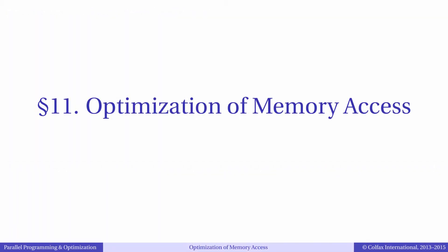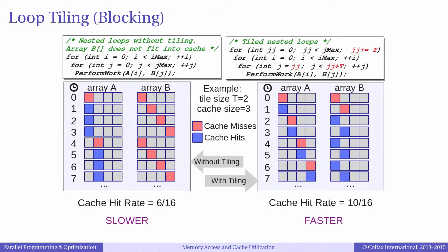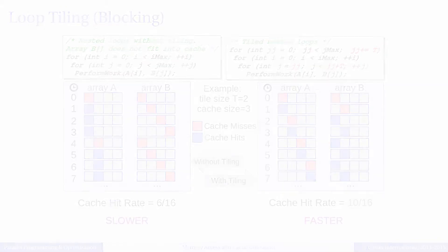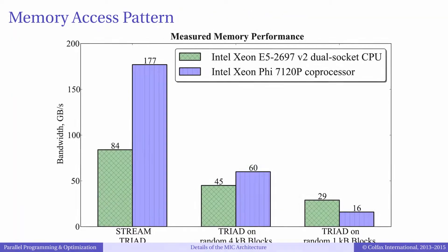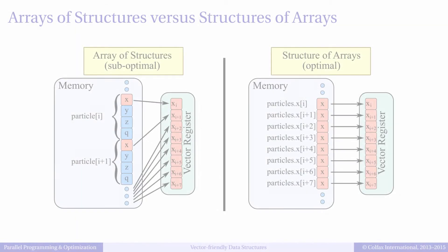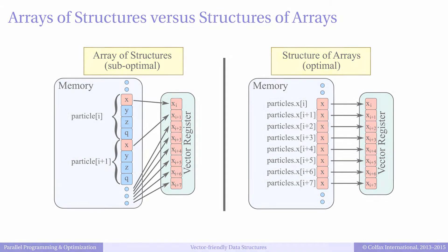Fourth, memory access. Your application must be compute-bound or memory bandwidth-bound in order to do well on Xeon Phi. That means that locality of data access in space and time must be enforced. To do that, techniques such as loop fusion, loop tiling, and cache-oblivious recursion can be used. Additionally, the data access pattern must be simple. If complex memory access is an inherent property of the algorithm, it may be possible to restructure data to pack memory accesses more compactly.